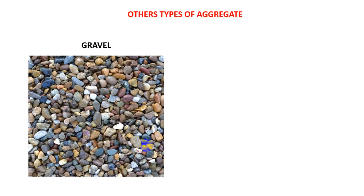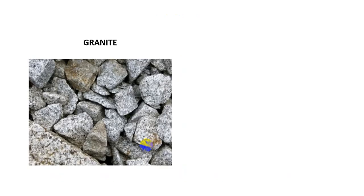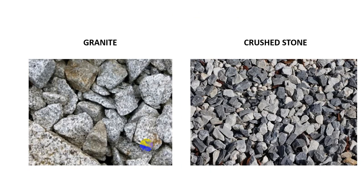First, gravel — here is a picture of gravel. This is used for heavy projects or high-rise buildings. Then there is sand, you know what sand is. After that, there is granite, which is mostly used in building construction for several important purposes. Then crushed stone — the difference between gravel and crushed stone is that gravel has a smooth surface.